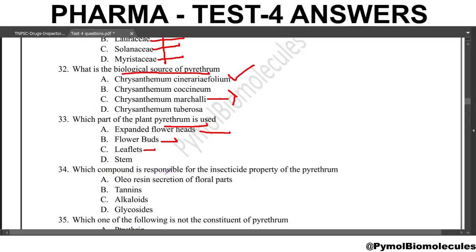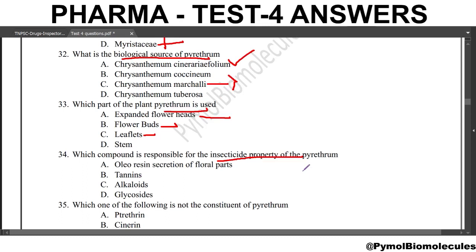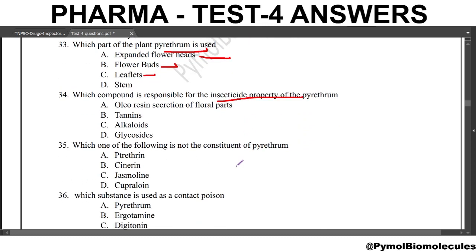Next question: which compound is responsible for the insecticide property of pyrethrum? The answer is the oleoresins of the floral parts. Next question: which one of the pyrethrins is not a constituent of pyrethrum? Pyrethrin, cinerin, jasmolin all correspond to pyrethrum. But cinerolone is not a constituent of pyrethrum. That is the answer.